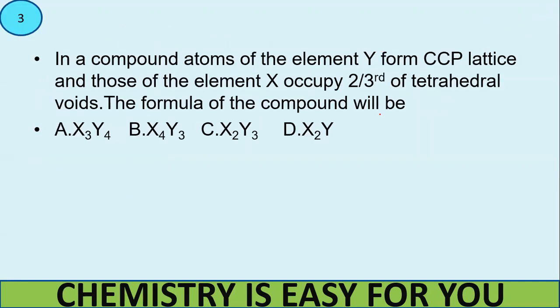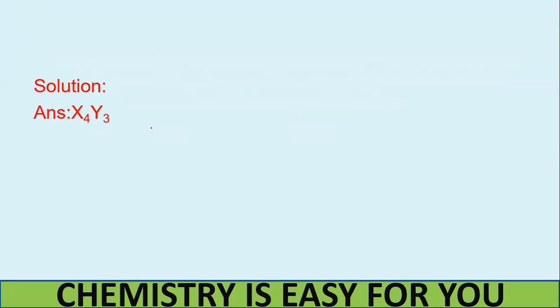Let's go to the next question. So in a compound, atoms of the element, so there are two elements that make up this particular compound, X and Y. And Y forms cubic closed pack lattice and X occupies two by third of the tetrahedral voids. So we need to find the formula of the compound. X and Y should be there. We need to know how much X or how much Y is present in the formula of that compound. Let's see the solution. So I will initially give you the answer: X4Y3 is the answer. Let's see how we get this particular answer.